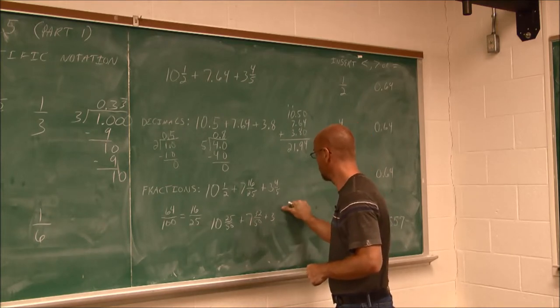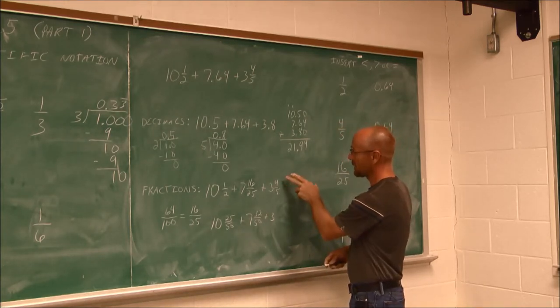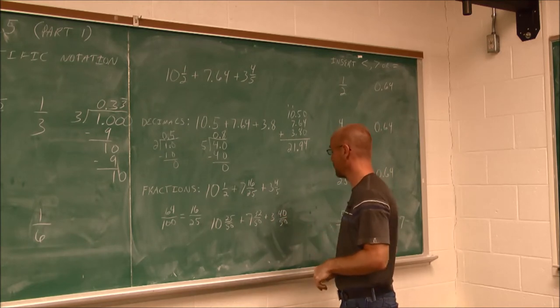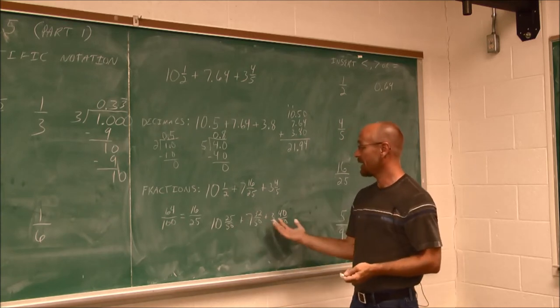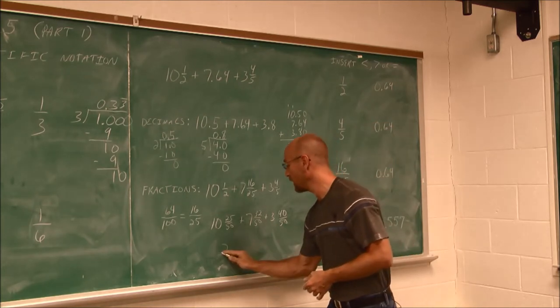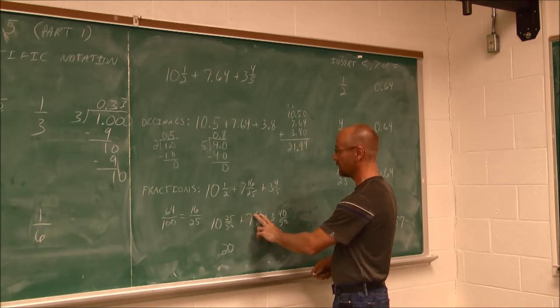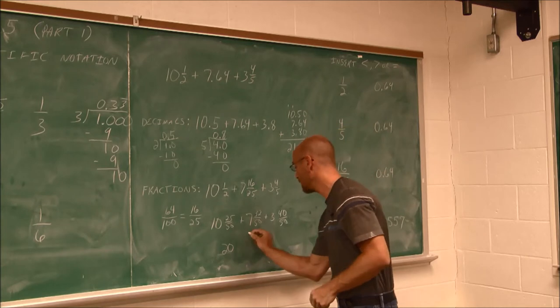This would be 10 and 25 fiftieths plus 7 and 32 fiftieths. And this would be 3 and 40 fiftieths. Now to add this, I can add the whole numbers together. 10 and 7 is 17, and 3 is 20. I can add my fractions together. 25 and 32 is 57, 57 and 40 is 97.